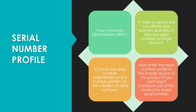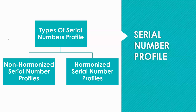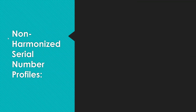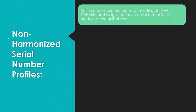Using the serial number profile, we can assign different conditions and patterns and maintain the master records. This is the main configuration we need to consider. Serial number profiles are basically of two types: non-harmonized and harmonized. Let's start with non-harmonized.